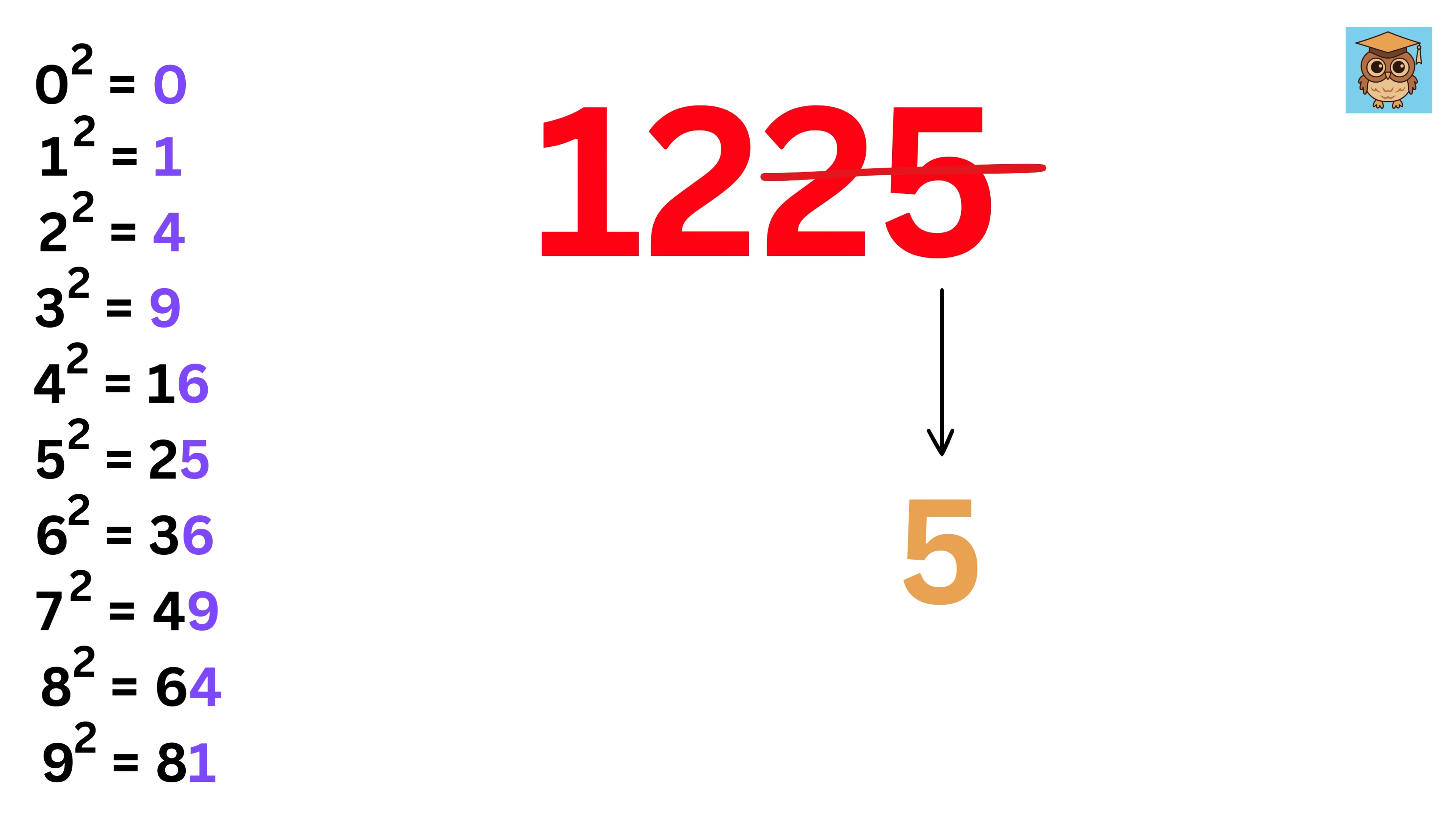Now cross out the last two digits. Now we want a square which is just below or equal to 12. Look here. It's 9, which is 3 square. So, we write 3 here, and it's done. 35 is the answer.